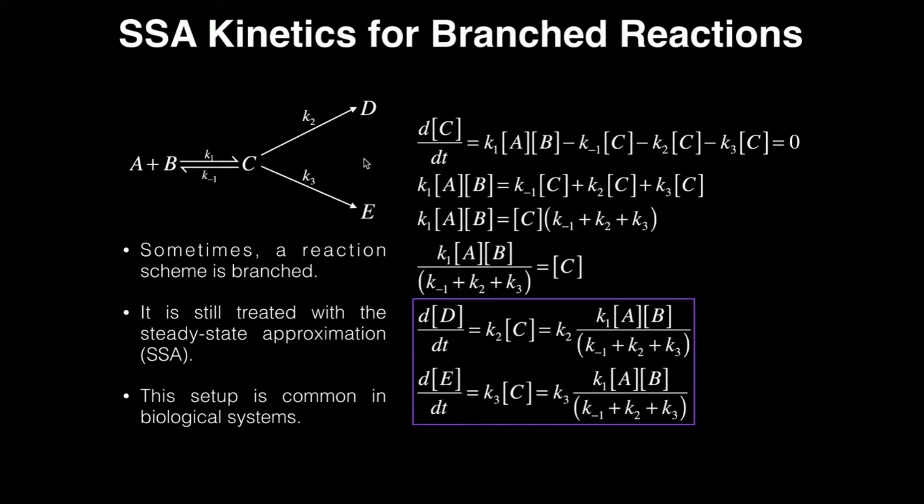Now I need to find the rate of formation of D and then the rate of formation of E. So the rate of formation of D is the change in the concentration of D with respect to time, which is K2 times the concentration of C, and then the rate of formation of E with respect to time is equal to K3 times the concentration of C. Well, I just found the concentration of C. It's this whole expression.